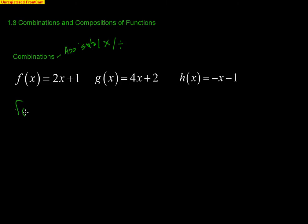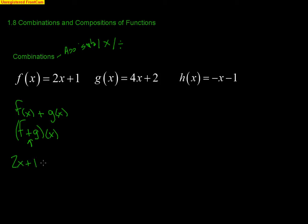You'll see different types of notation. If you have f(x) plus g(x), that tells you to take f(x) and g(x) and combine like terms. You can also write it as (f+g)(x) — a lot of people confuse this and think they have to multiply by x, but it's just telling you to add f and g. So if I'm adding f and g, I take 2x+1 and add 4x+2, combining like terms to get 6x+3.